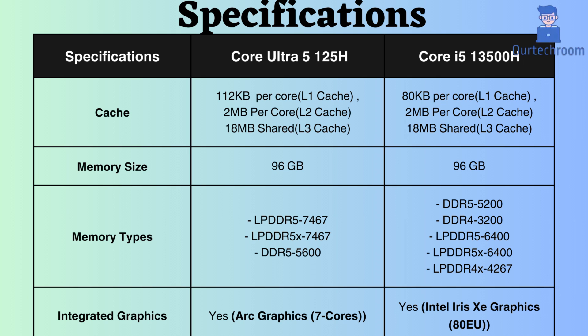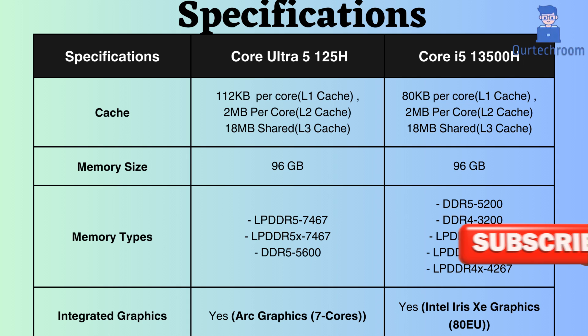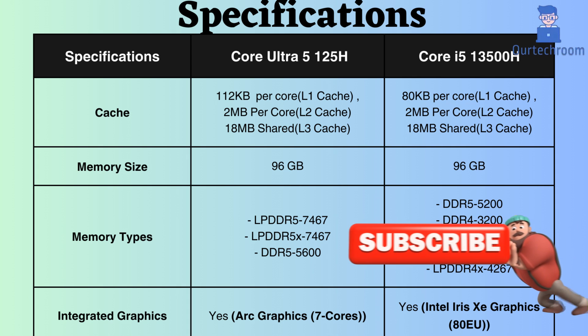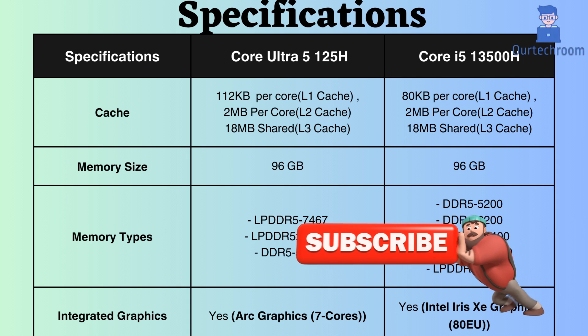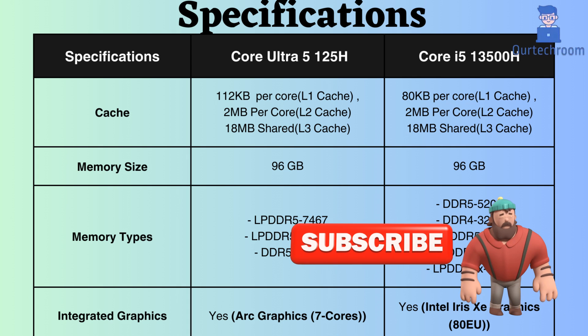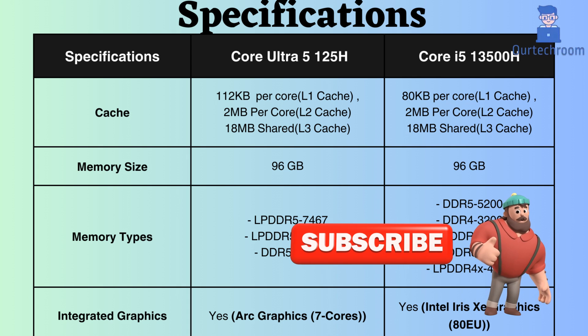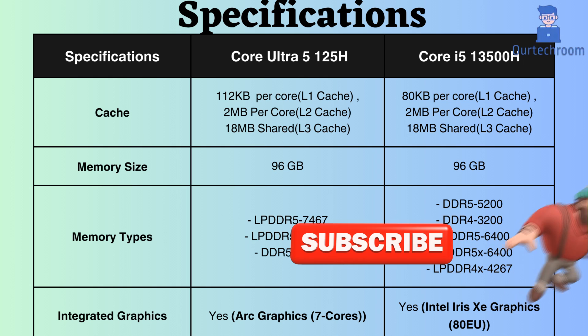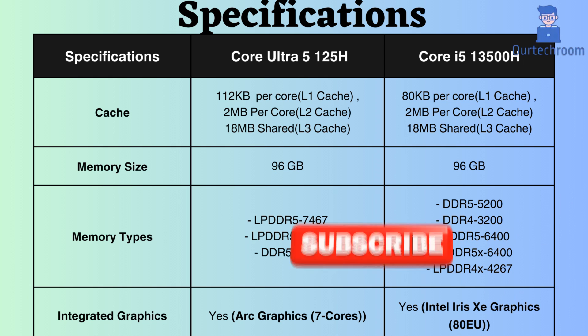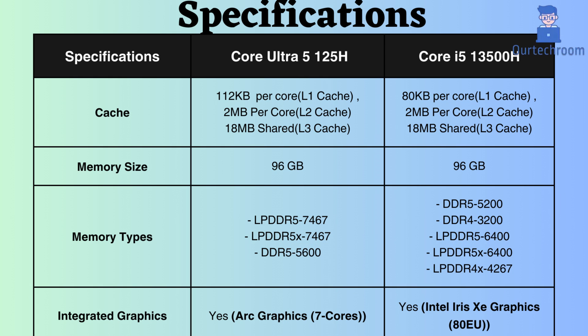Regarding memory size, both processors support up to 96 GB of RAM. Both processors support DDR5 and LPDDR5 memory, but the Core Ultra 5 125H boasts a slightly higher frequency. Consequently, memory access will be faster with the Core Ultra 5 125H.